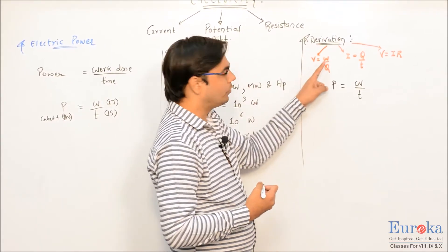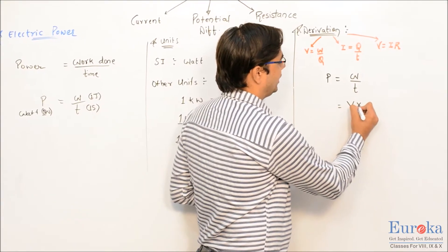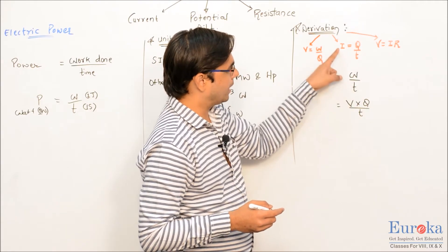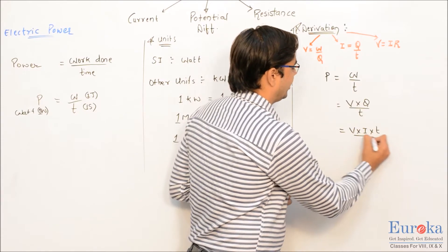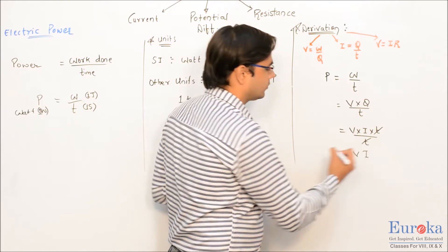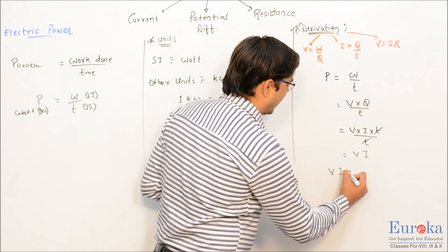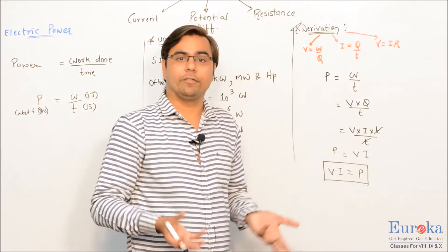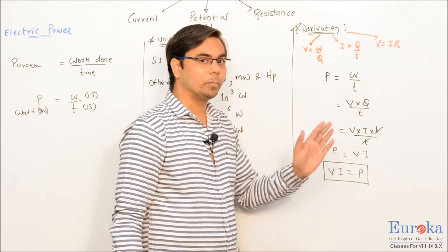Using the formula for potential difference, instead of W we can write V multiplied by Q. So we have power equals V times Q divided by time T. Then, instead of Q we can write I times T, giving P equals V times I times T divided by T. The T cancels and we have power equals V times I. Rearranging, V times I equals P — this is the VIP formula: V (potential difference) multiplied by I (current) always equals P (power).